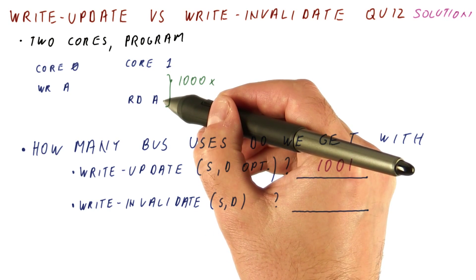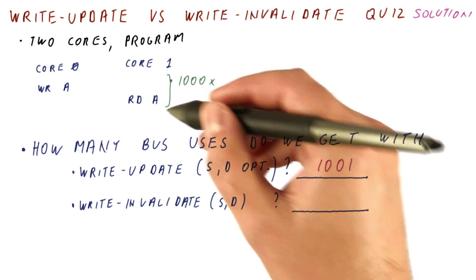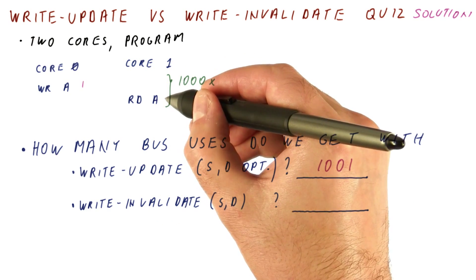Core one reads, has a miss. Core zero has to supply the data. So far we had one and one.